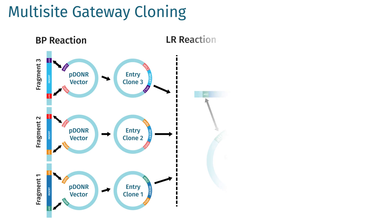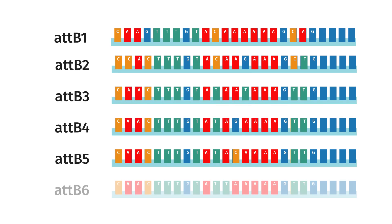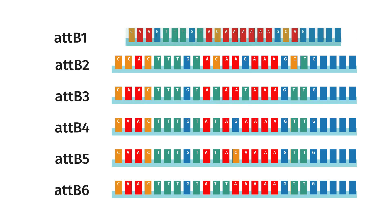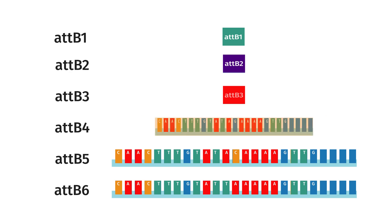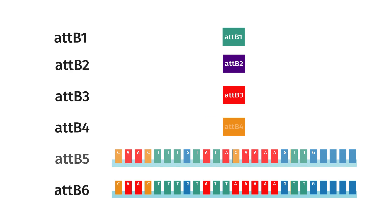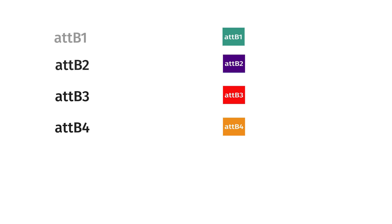Multi-site gateway cloning can assemble multiple fragments into a single destination vector. Standard gateway cloning uses AT-B1 and AT-B2 to introduce a single fragment, while multi-site gateway cloning utilizes the site specificity of four other AT sites to recombine multiple fragments into a single construct in one step.